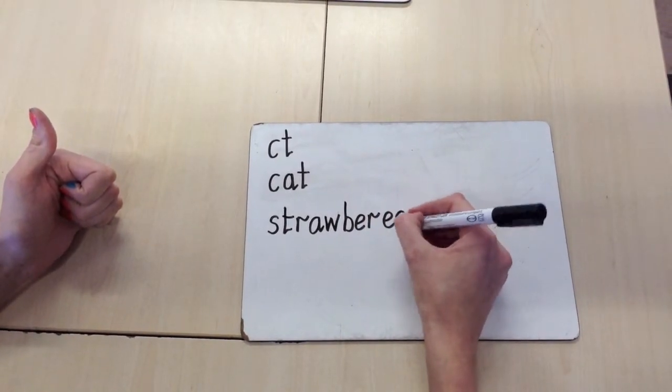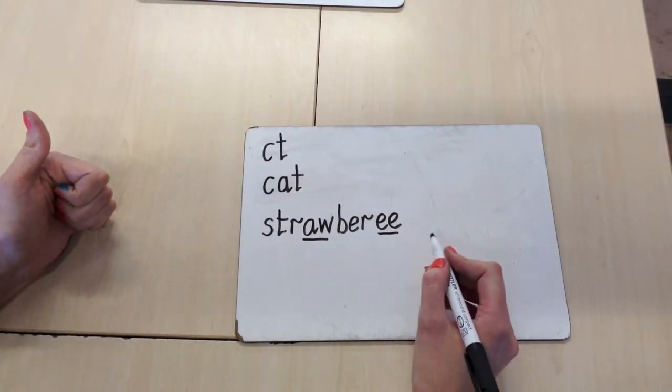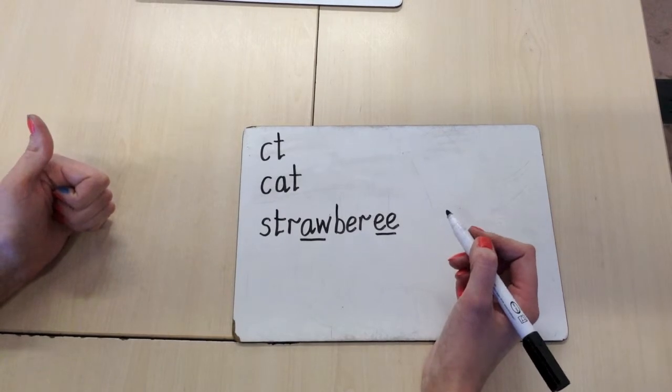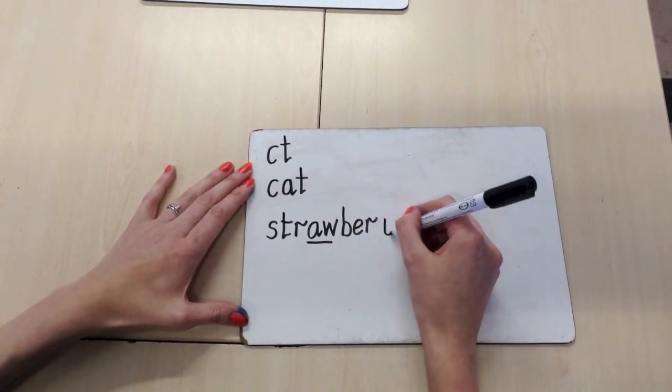And they would hear the E-digraph at the end. We teach children that if you can hear E at the end of a word, it's usually a cheeky Y. So you could encourage your child to change that to a Y.